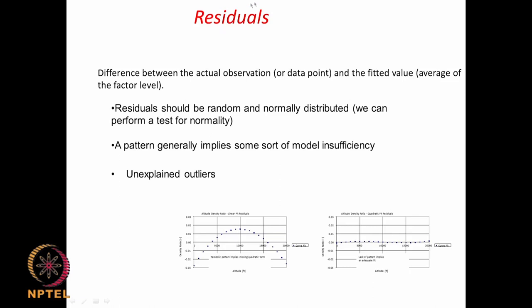Once you do the fitting, look at the residuals — the difference between predicted and actual values. Generally, these residuals should be random: some positive, some negative. They should not all be positive or all negative, which would indicate a problem in your fitting. They should be normally distributed — you can even do a normality test. There should be no strong pattern; ideally, residuals should be small and randomly scattered.